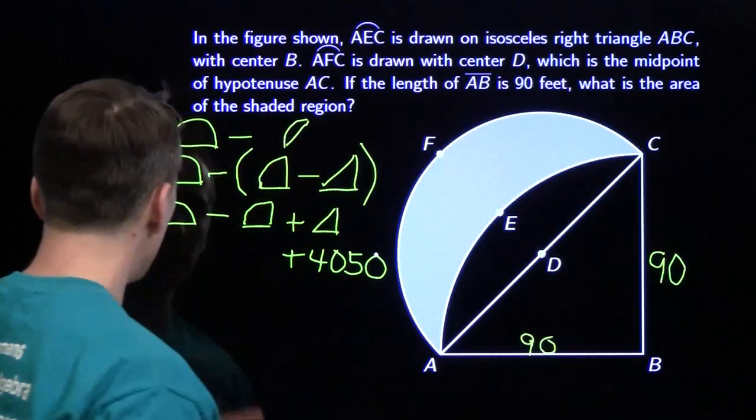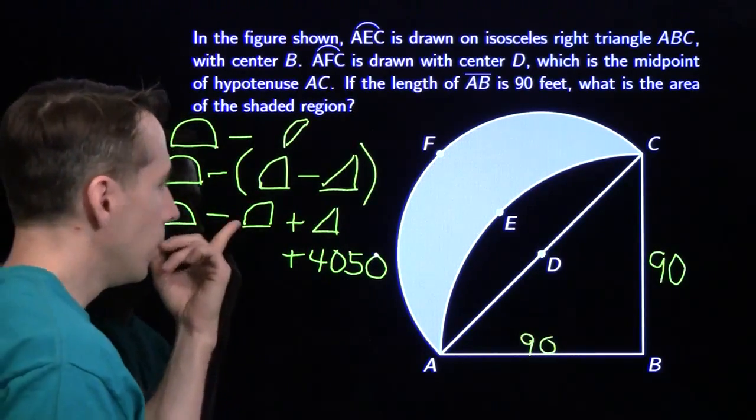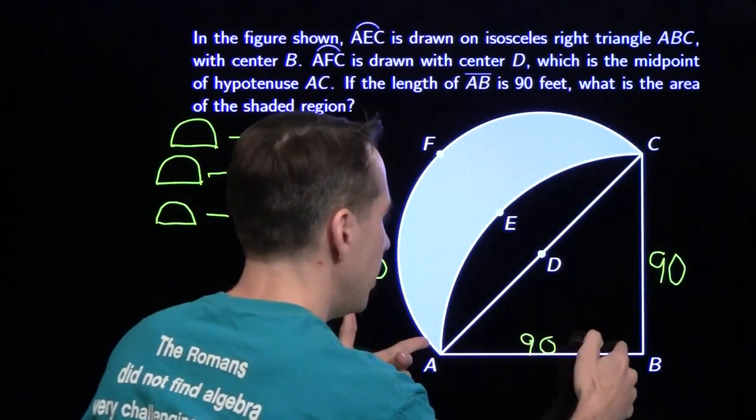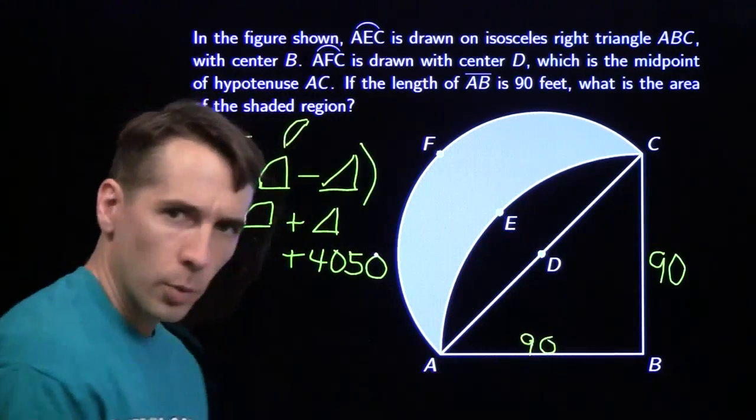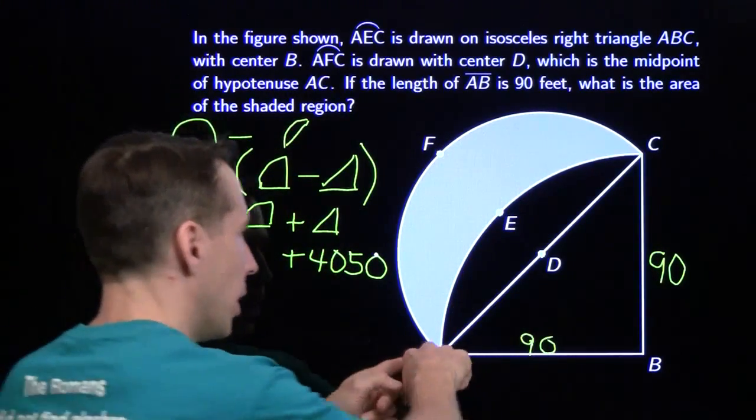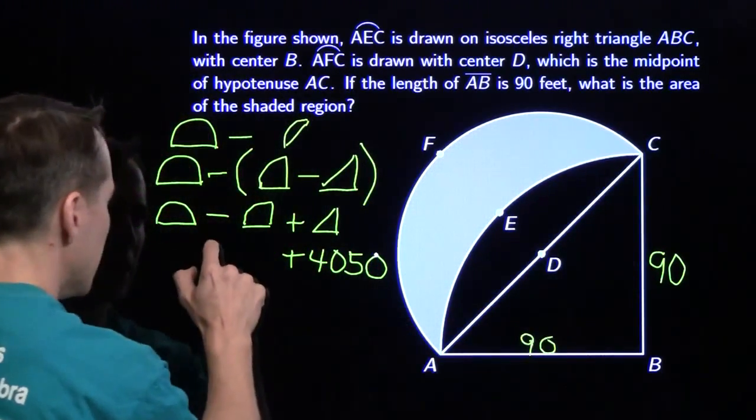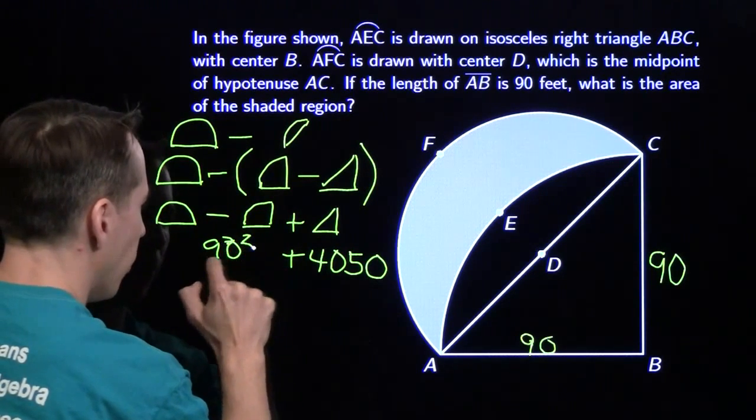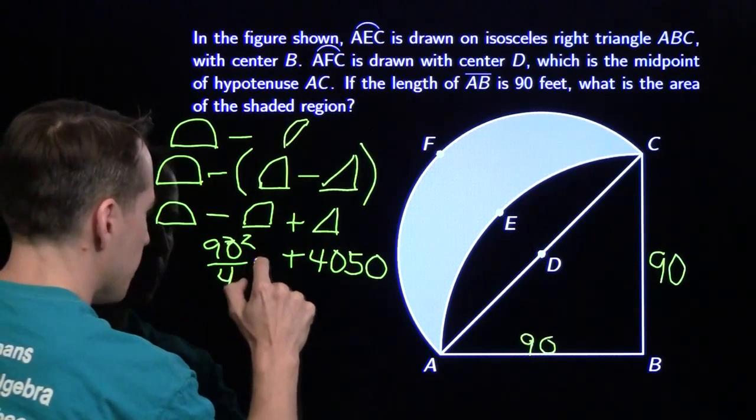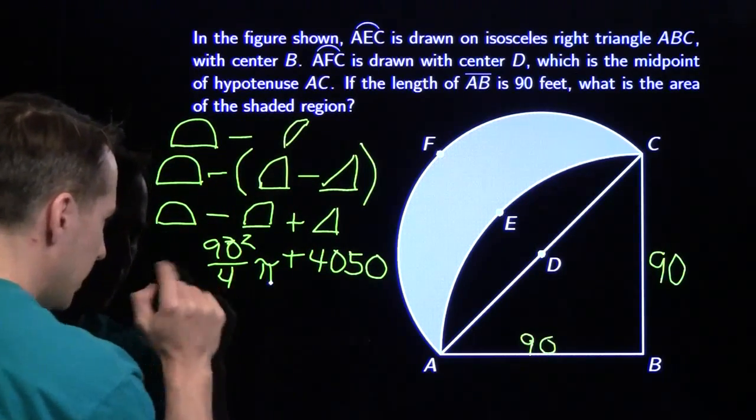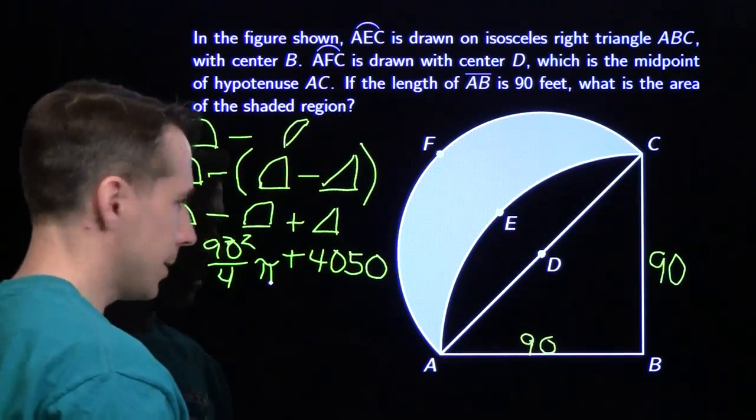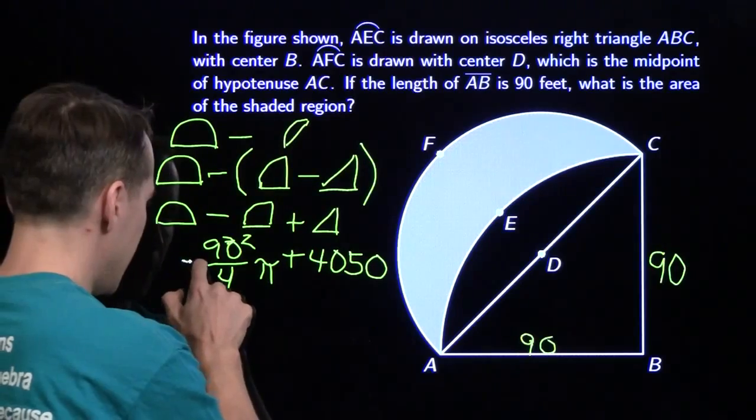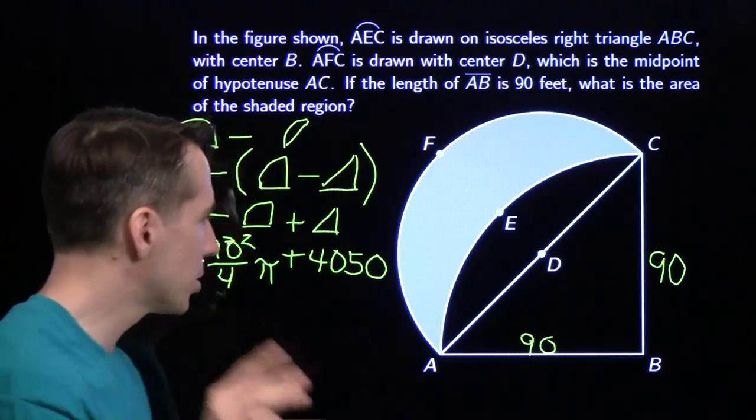Now to deal with the semicircle and the quarter circle. The quarter circle, we've got the radius right here, 90 squared. We have to divide by 4 because we've got a quarter circle. It's going to be 90 squared divided by 4 times π. And I'm not going to multiply that out just yet because I'm going to hope for something nice to happen.